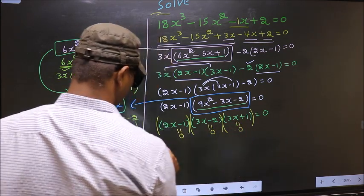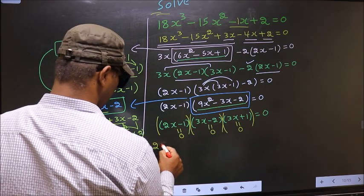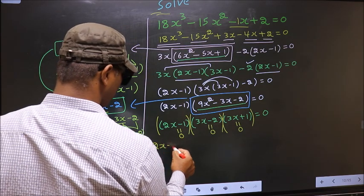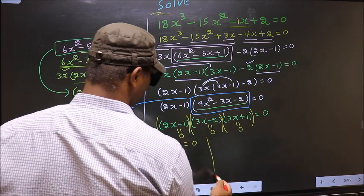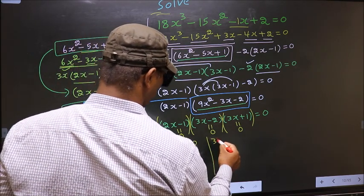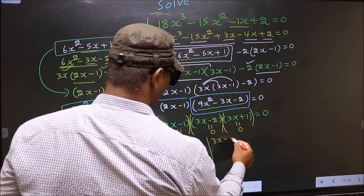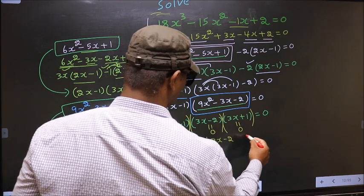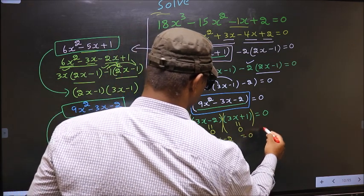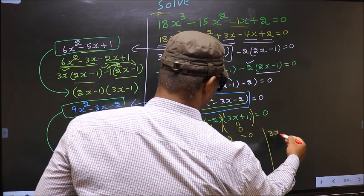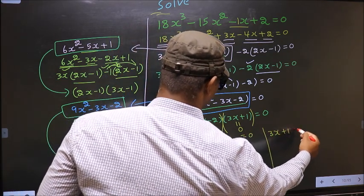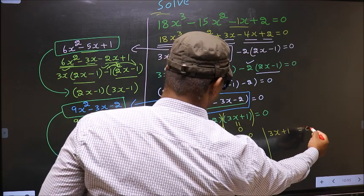That is 2x minus 1 equal to 0, 3x minus 2 equal to 0, and 3x plus 1 equal to 0.